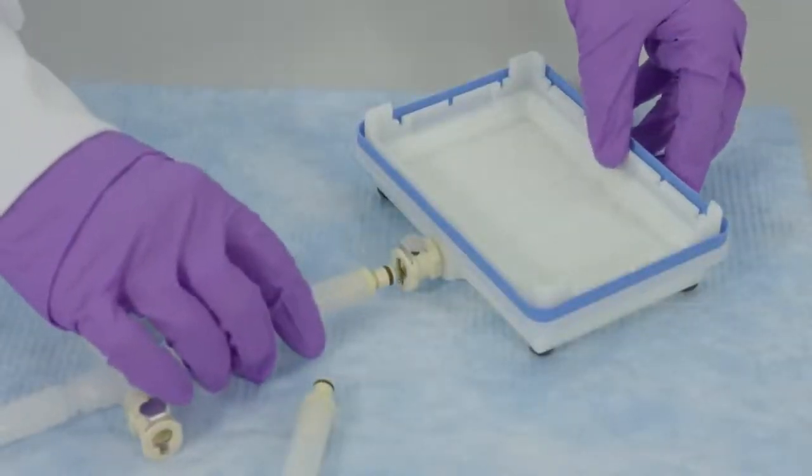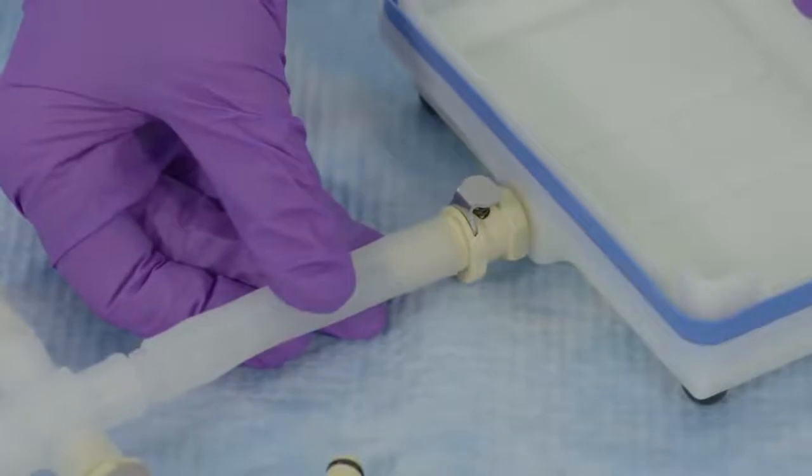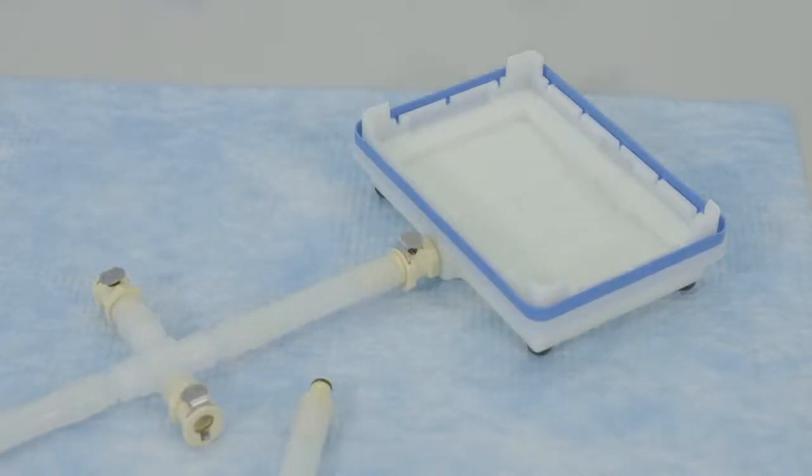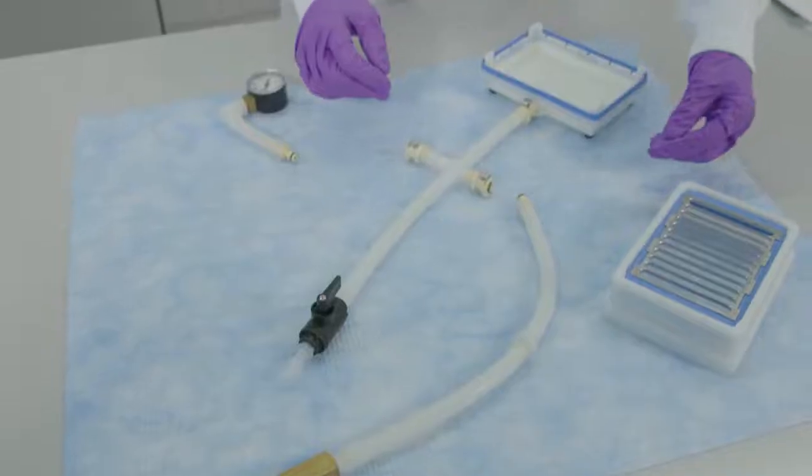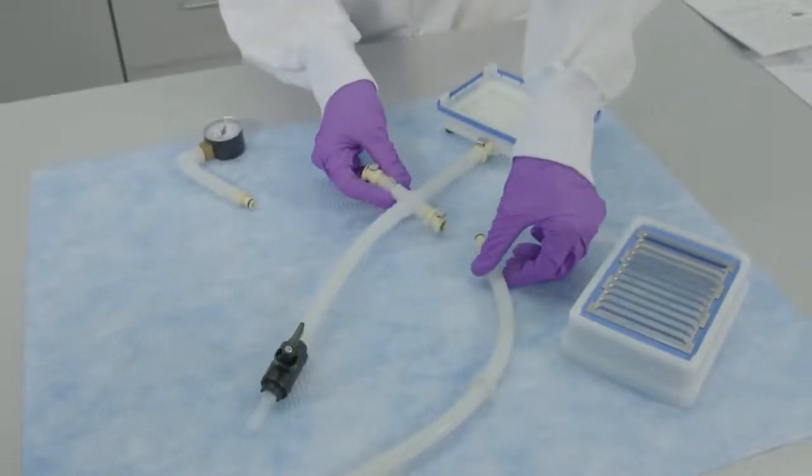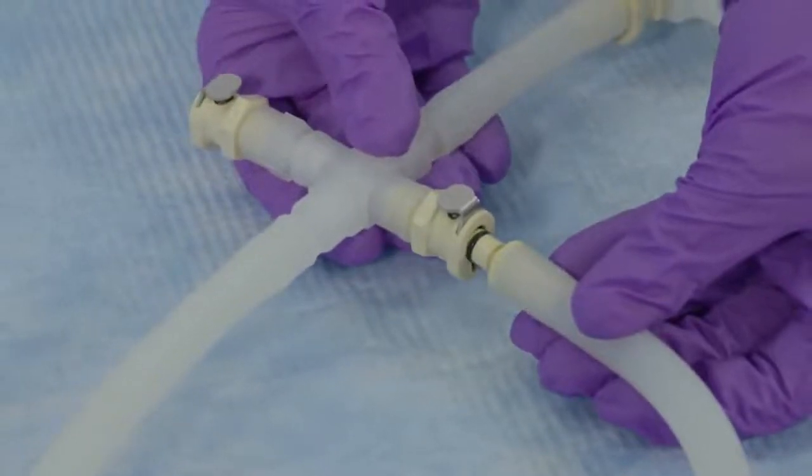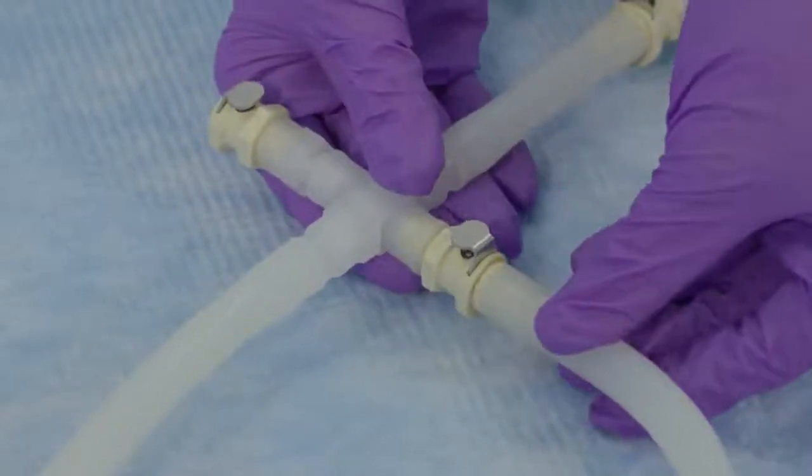Push the coupling insert on the end of the four-way connector into the quick disconnect fitting on the manifold base until it clicks into place. Then push the coupling insert on the end of the vacuum control valve tubing into the quick disconnect fitting on the shorter arm of the four-way connector.